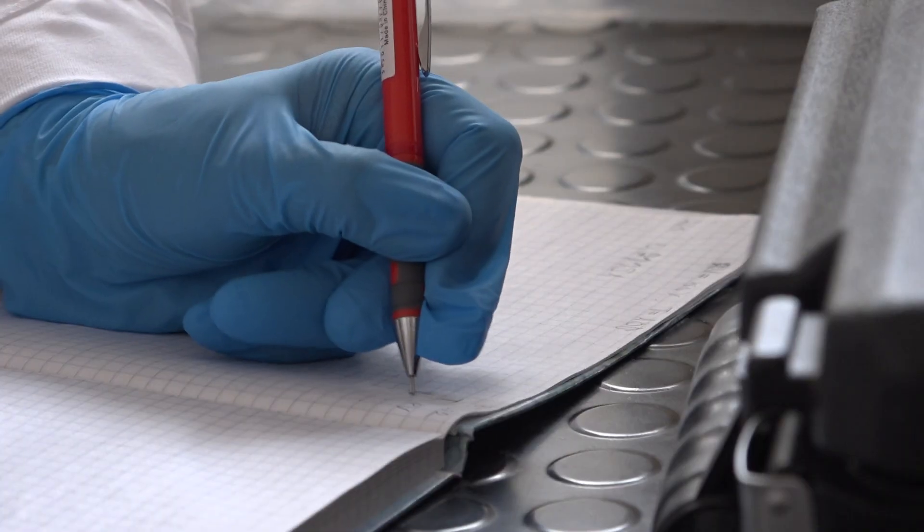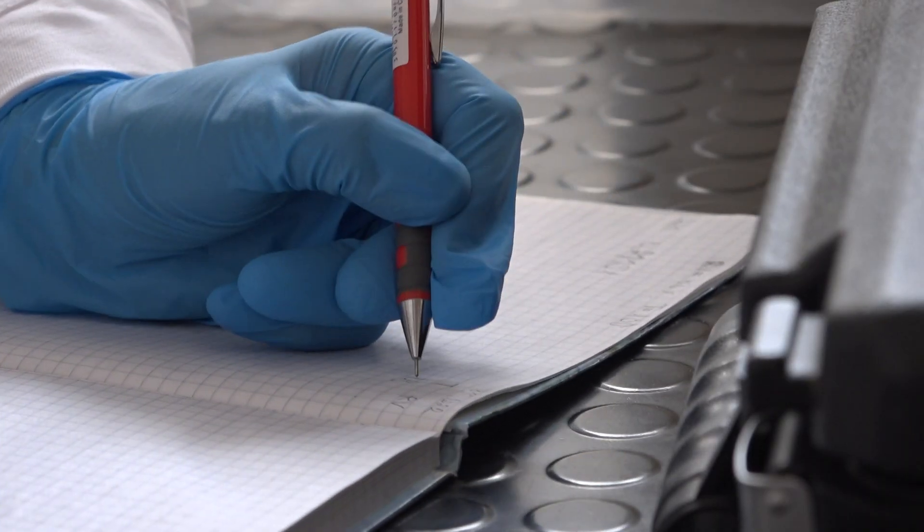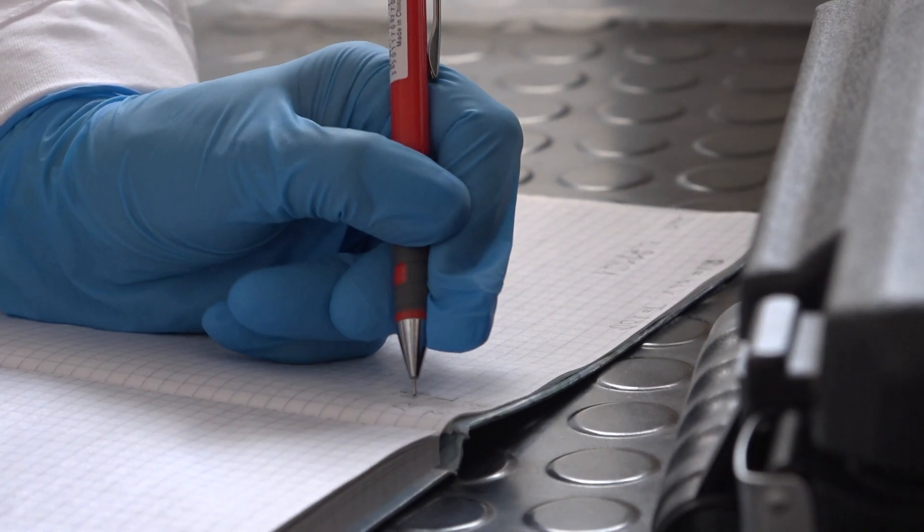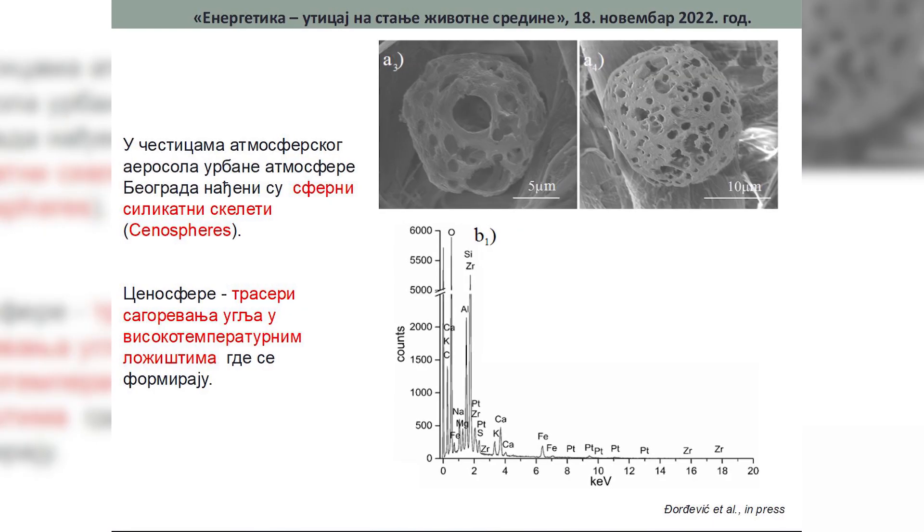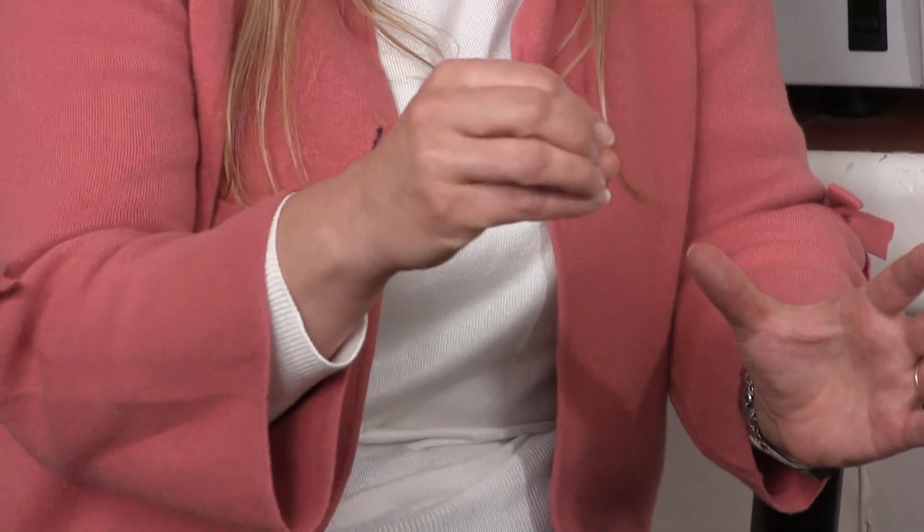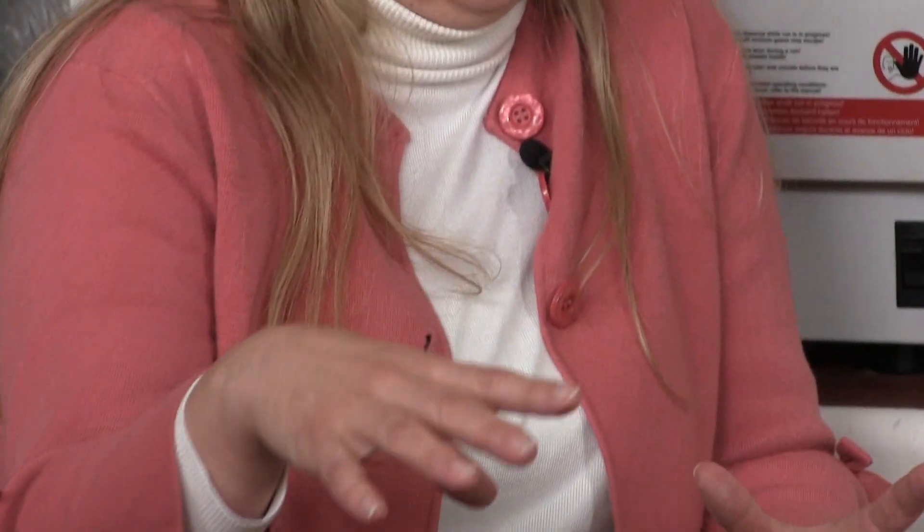I onda mi na terenu, pogotovo ako je neka akcidentna situacija, znači mi možemo jako brzo da dođemo do prvih podataka kada odredimo tu magnetnu susceptibilnost i onda samo na tim nekim najkritičnijim tačkama gde dobimo visoke vrednosti, uzmemo uzorke i radimo metode hemijske analize. I u tom slučaju mi možemo brže da dođemo do te neke slike o kontaminaciji.